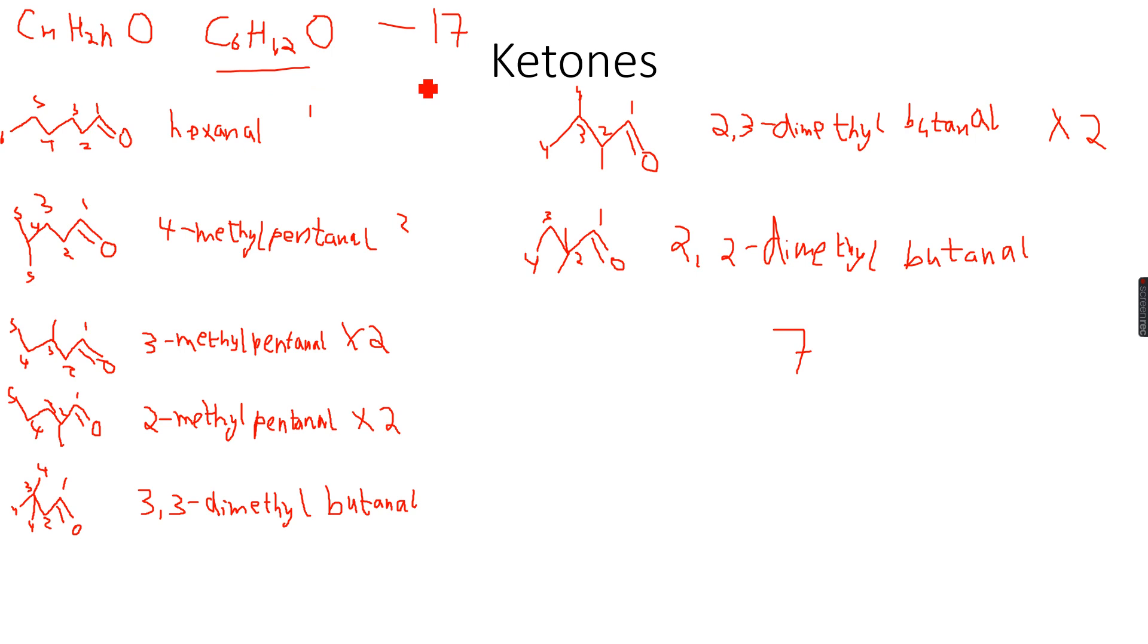So in total there are 17 isomers which have this formula, structural and stereo included. If we had to talk about only structural isomers, then there were six for the ketone and for the aldehyde there were seven. So if they were only asking for structural isomers there would be 13, but if they ask for structural and stereo both, there are 17 isomers in total.